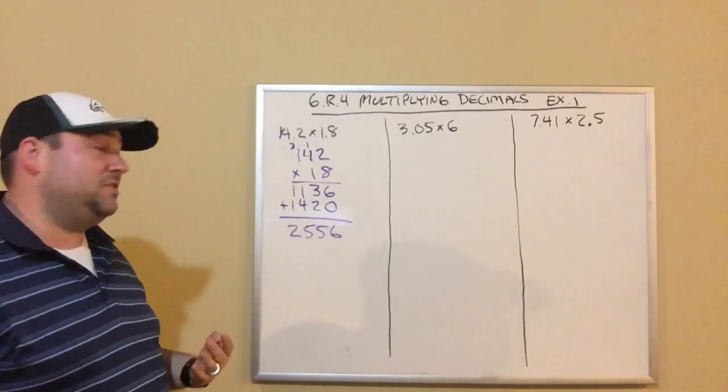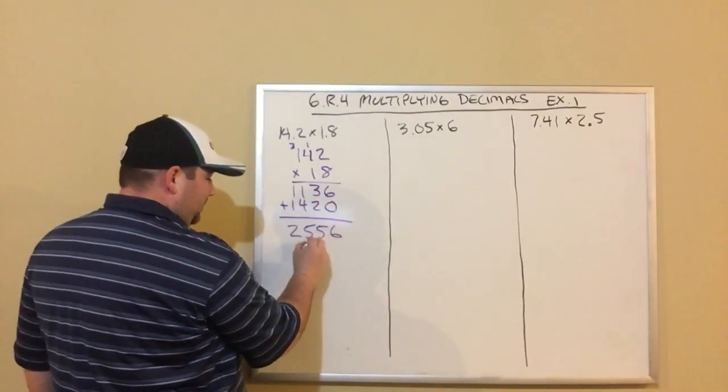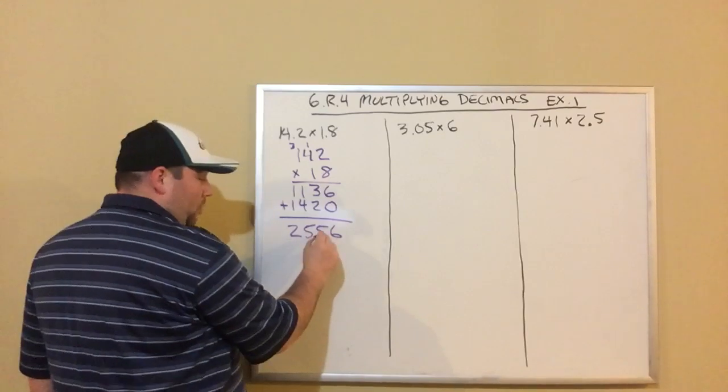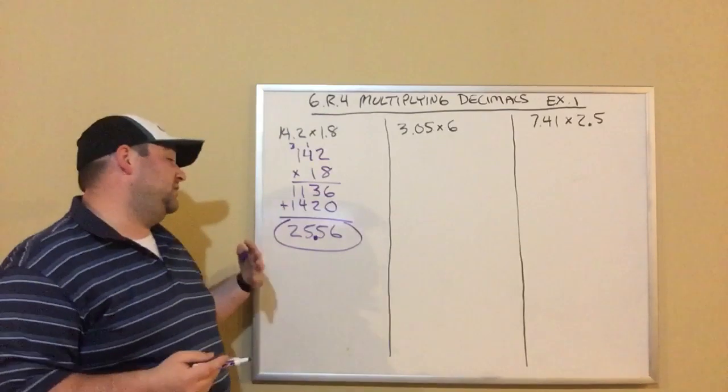That means there needs to be two digits after the decimal point in our answer. So I look here, 25 is going to be right here because that means I have one, two digits after the decimal point. So my answer is 25 and 56 hundredths, 25.56.